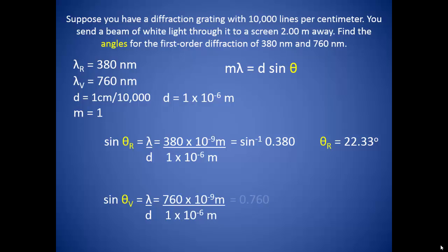We can do the same thing for violet light, and we end up with a sine of theta equal to 0.760. Inverse signing that gives us an angle of diffraction of 49.46 degrees for the violet light.